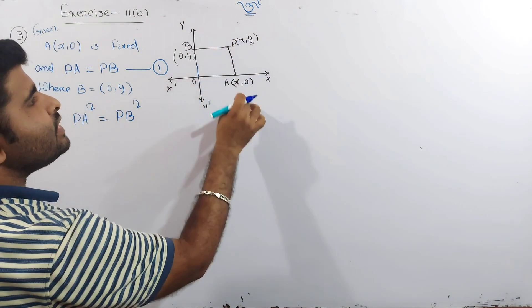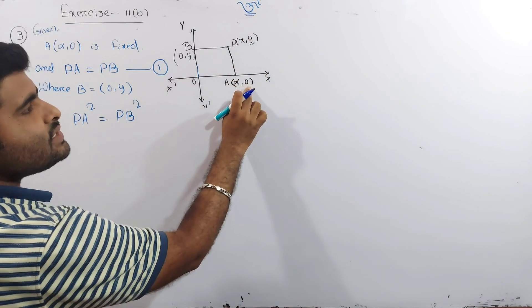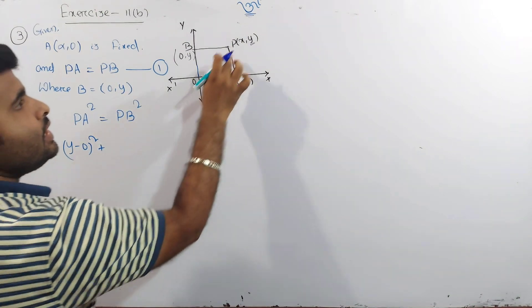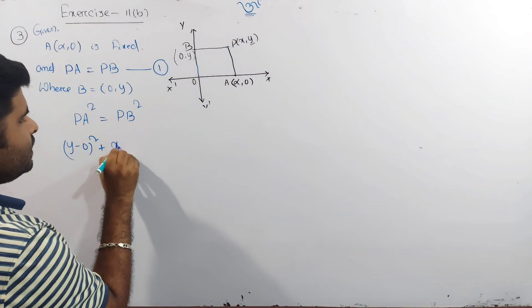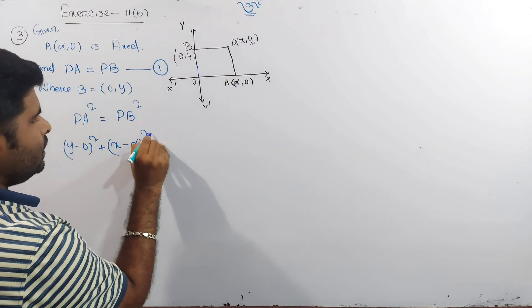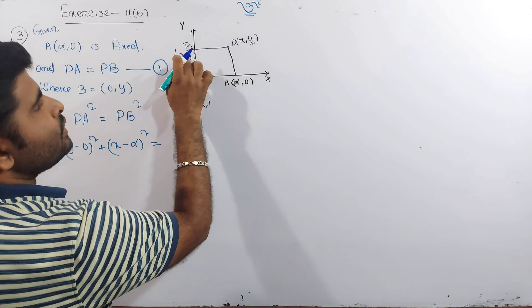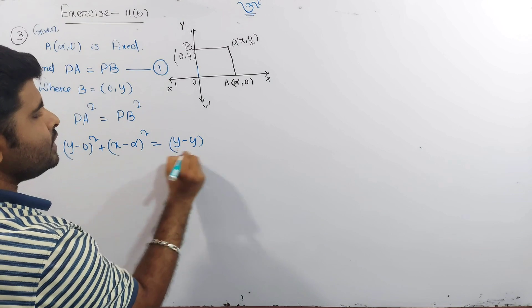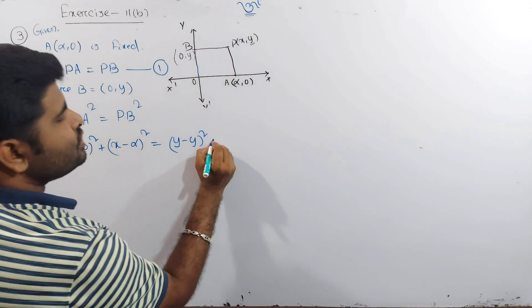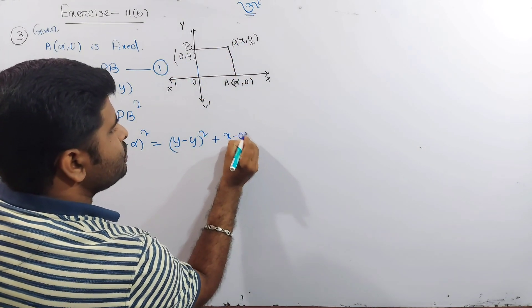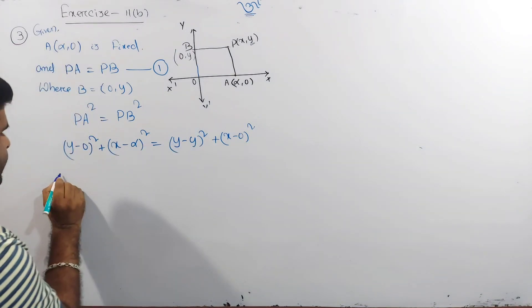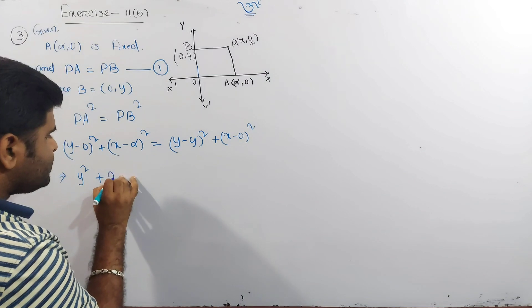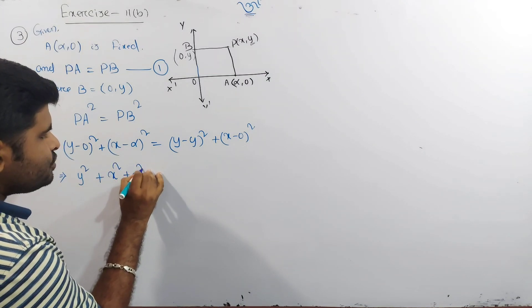PA² equals: y² + (x − α)² equals PB². PB means (y − y)² + (x − 0)², which is (y − y)² + x². So: y² + (x − α)² = x².